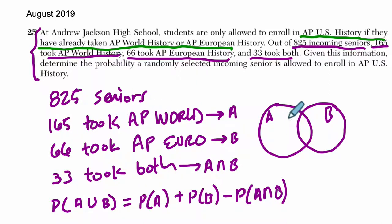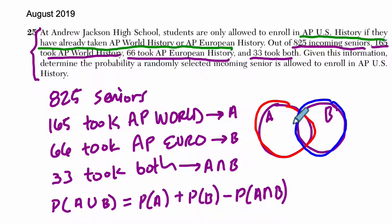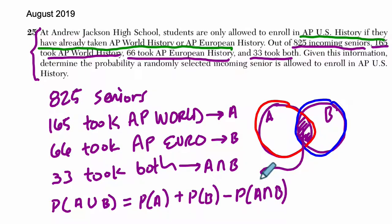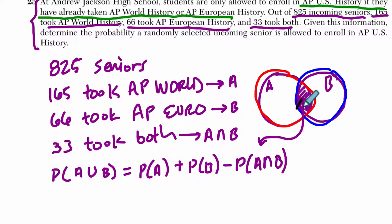When we count all people who took AP World, we include everyone in circle A. When we count AP Euro, we include everyone in circle B. People who took both AP World and AP Euro appear in the overlapping intersection. So we counted them once in A and again in B — that's double counting the intersection, which is why we subtract it.